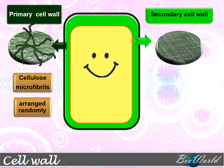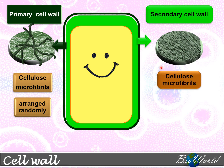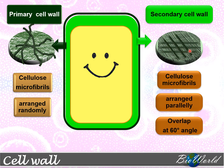The secondary cell wall is also made of cellulose microfibrils. However, as you can see in the diagram, the cellulose microfibrils are arranged parallelly, with each layer overlapping at an angle of 60 degrees. In this way, the secondary cell wall is much stronger than the primary cell wall.